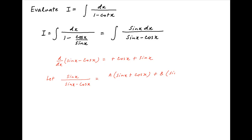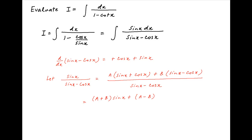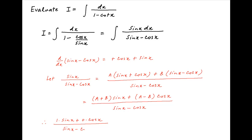The integrand can be written as [a times (sinx plus cosx) plus b times (sinx minus cosx)] divided by (sinx minus cosx). The numerator of the right-hand side expands to (a plus b) times sinx plus (a minus b) times cosx. The numerator on the left-hand side is 1 times sinx plus 0 times cosx, divided by sinx minus cosx, equal to the right-hand side.